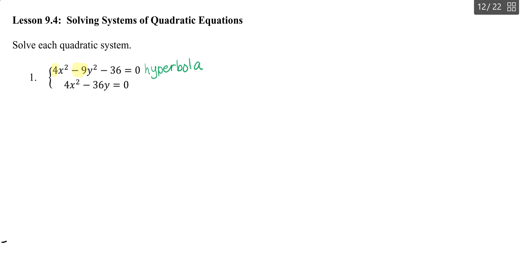The second one, we only have one squared term. We can see that we have only an x squared term. And with this x squared term, since that's the only one, we know that the second equation is going to be representative of a parabola.